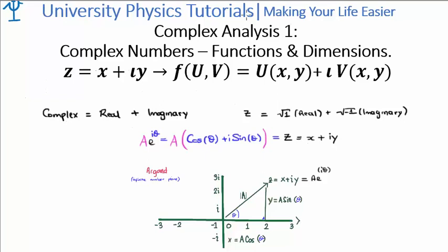Firstly, I'd like to do some very quick recap. A complex number has two components, a real component and an imaginary component. The building block for the real number line is the square root of plus one, whereas the building block for the imaginary number line is the square root of minus one. We use z as the placeholder for the arbitrary complex number, and in rectangular coordinates we say that it is x, the real component, plus iota times y, the imaginary component.